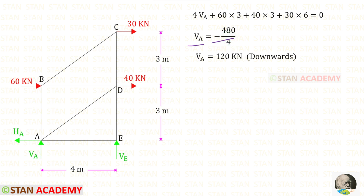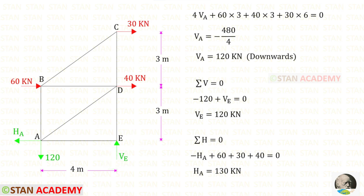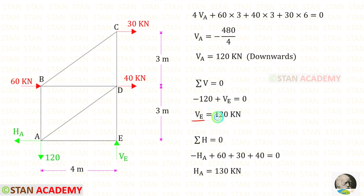That means our assumption is incorrect. We assumed that VA is acting upwards, but actually it is acting downwards. Now, let us apply Sigma V = 0 and find VE. VA is acting downwards, so it will be negative. Let us keep VE upwards, so it will be positive. For VE, we will get a positive value — that means our assumption is correct, and VE is acting upwards.